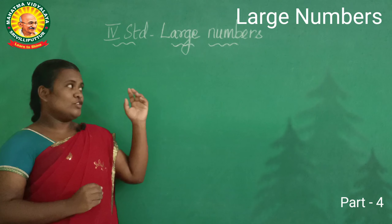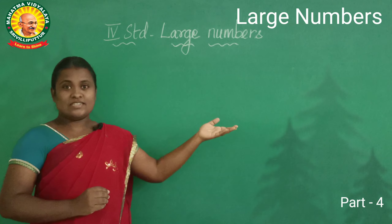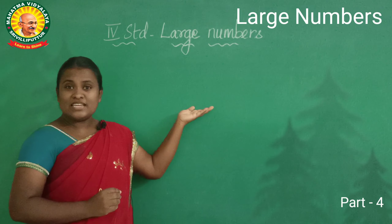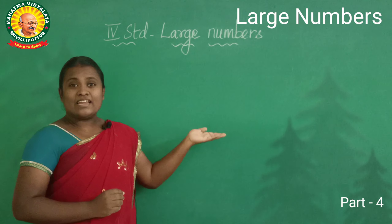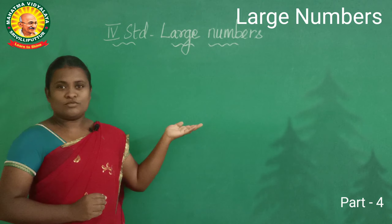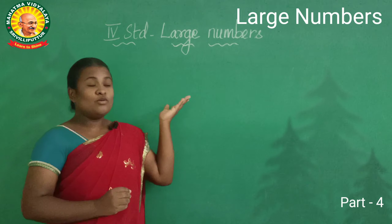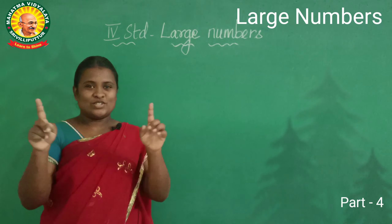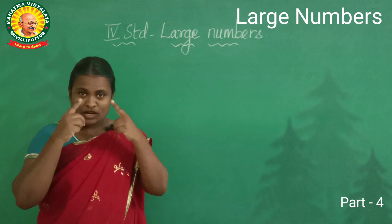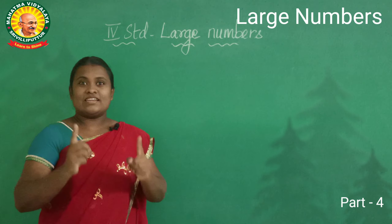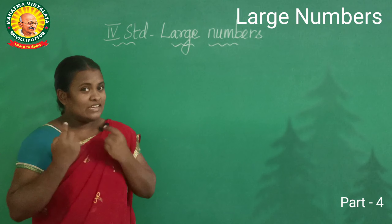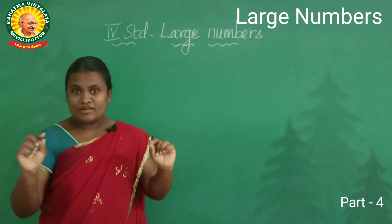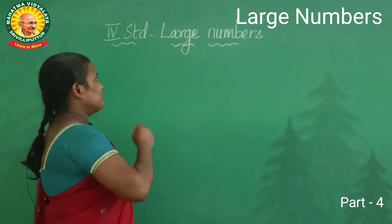Okay, we draw a chart, we insert the numbers, and then identify the place and also the place value. Now Miss is going to give a number. You have to draw a chart, say the places and the place value, and also write the number name. Are you ready?